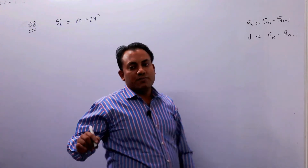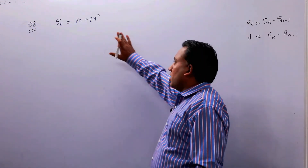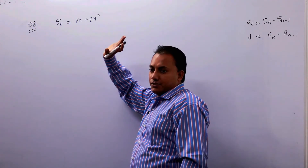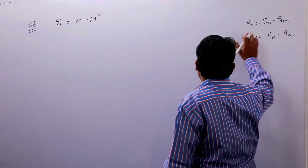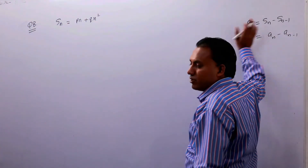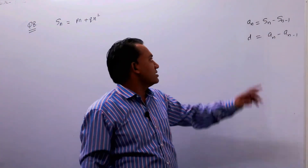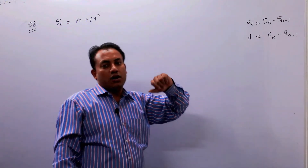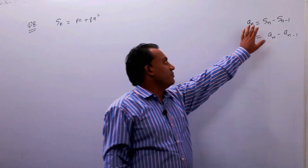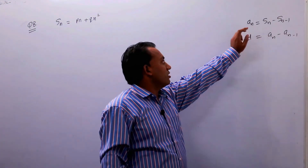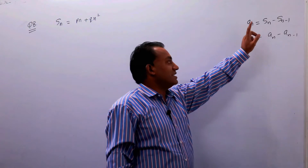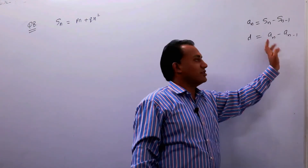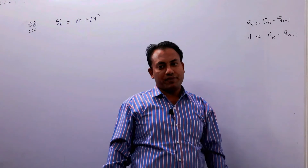बच्चों, आपको इस question में Sn given है, और आपको common difference चाहिए। उसके लिए पहले हम an find करेंगे इस formula से: Sn minus S(n-1)। और फिर जब हमें an मिल जाएगा, तो हम an की help से a(n-1) पता करेंगे। फिर जो इन दोनों का difference होगा, वो common difference होगा।